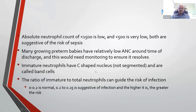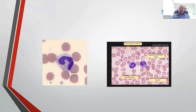The immature neutrophils have a C-shaped nucleus which is not segmented — these are the band cells. A ratio of 0 to 0.2 is normal, and 0.2 to 0.25 is suggestive of infection; the higher it goes, the greater the risk. This is because the marrow store is very low in newborns, and when marrow stores are released due to stress like infection, the band cells are also released. This is the C-shaped band cell before segmentation is complete, and the mature neutrophil has up to three to five segments.